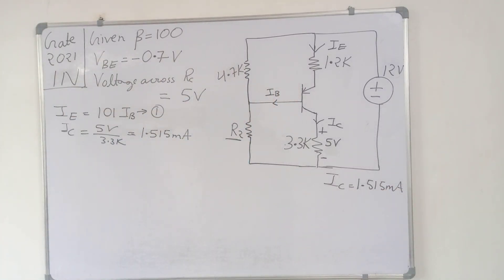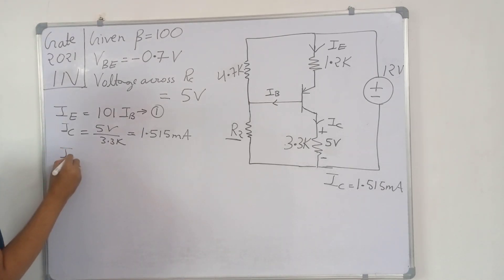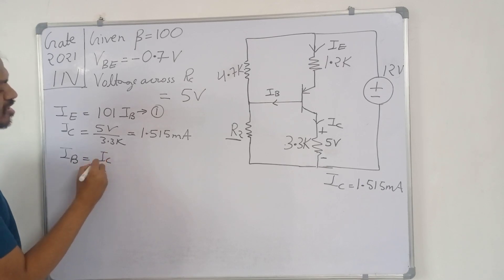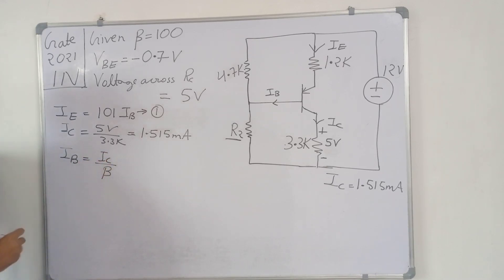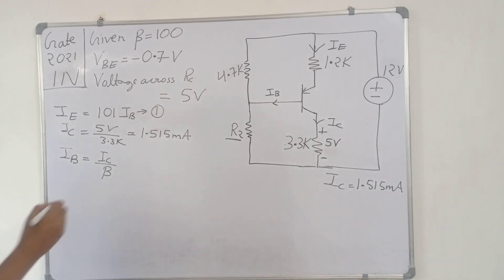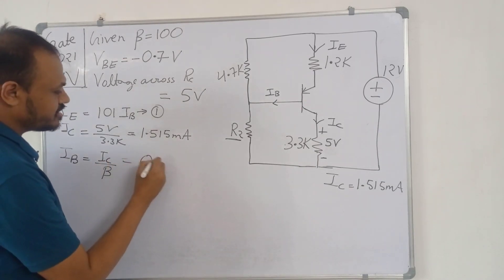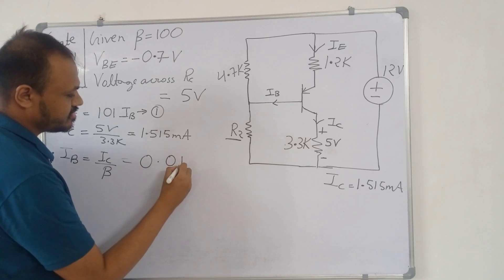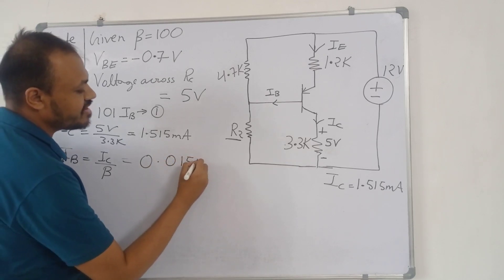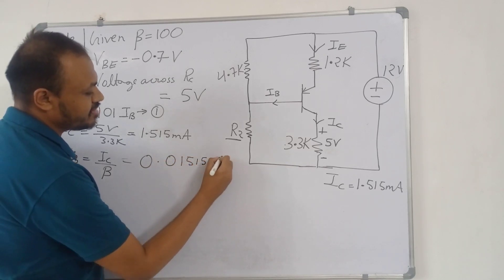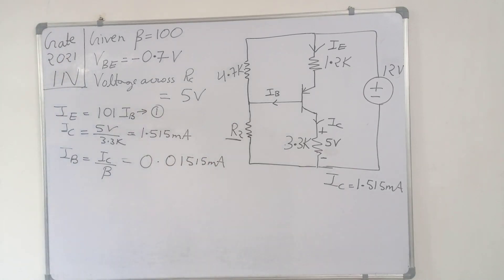We have found IC equal to 1.515 milliamperes. Now, IB is equal to IC divided by beta. So IB will be equal to 0.01515 milliamperes. We have now found the values of both IC and IB.